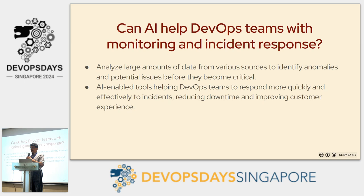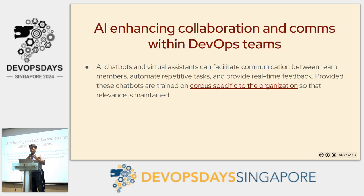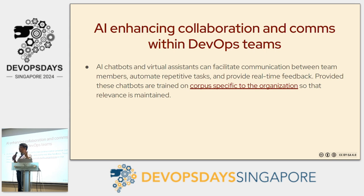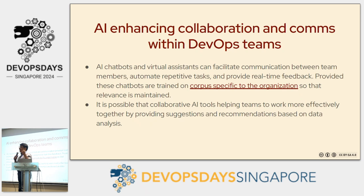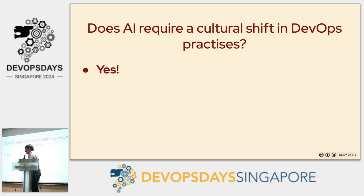There's nothing new I'm telling you here — I'm asking: have you considered using AI in the system? Especially when you deploy AI for analysis, is there a human in the loop? Don't forget the human in the loop, otherwise you have a bigger problem. Is AI enhancing collaboration and communication within DevOps teams? This is probably something we've overlooked. Things like Slack produce an excessive amount of information flowing up and down. Can AI give you a summary of all the conversations that happened last night? Can it help teams work effectively by providing suggestions and recommendations? These tools need to be reviewed and reassessed regularly for accuracy, otherwise a mistake in the summary leads to an even bigger mistake.